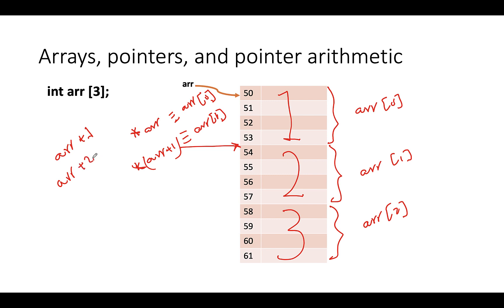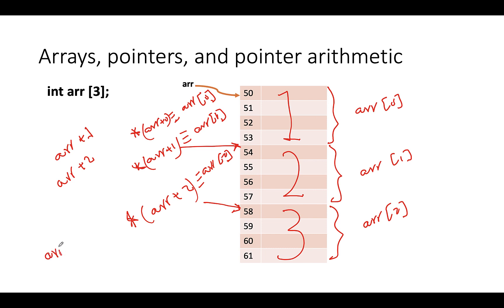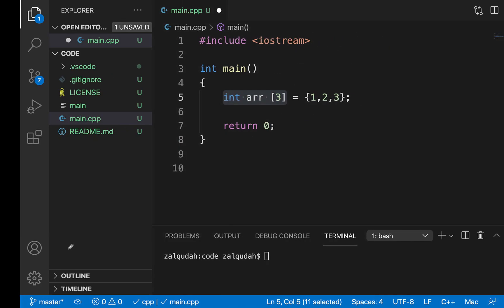Similarly, array + 2 gives a pointer that points two elements away from where array points — two elements away is 8 bytes — so that points to array[2]. Dereferencing it with *(array + 2) gives the third element, same as array[2]. In general, the formula is: *(array + i) is the same as array[i]. There is a strong relationship between the two, and I can use either the array notation or the pointer notation interchangeably.